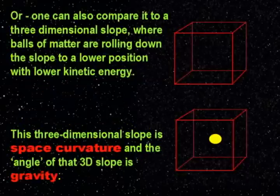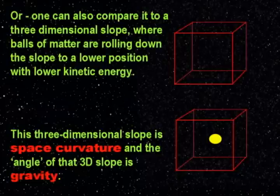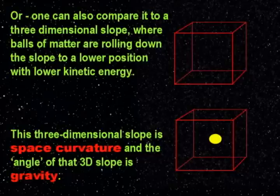Or, one can also compare it to a three-dimensional slope where balls of matter are rolling down the slope to a lower position with lower kinetic energy. This three-dimensional slope is space curvature, and the angle of the 3D slope is gravity.